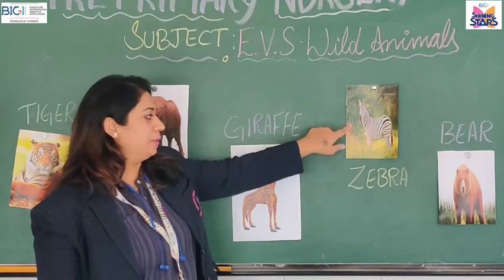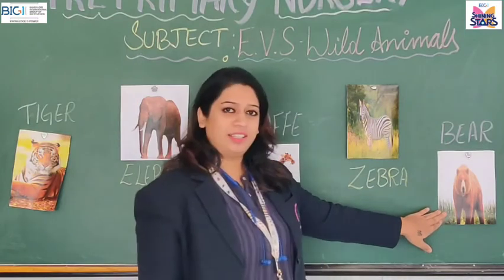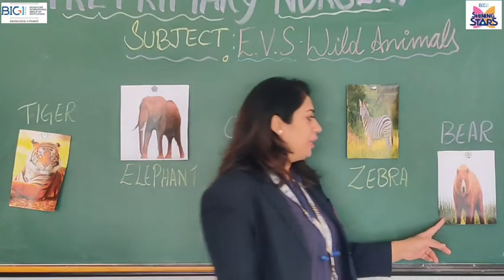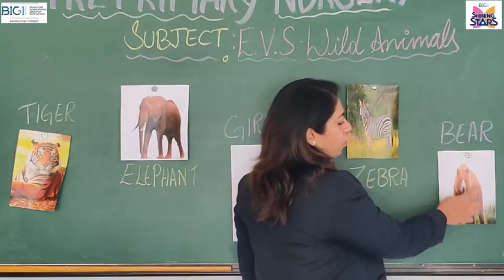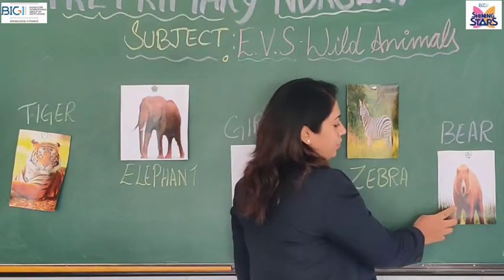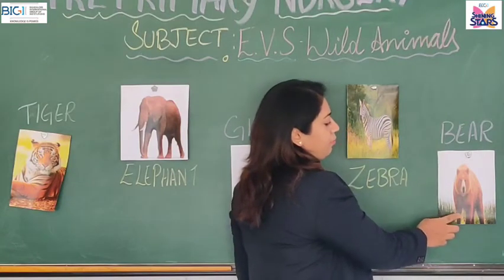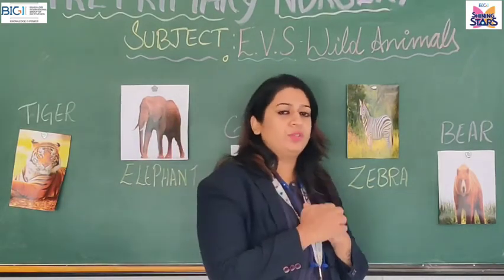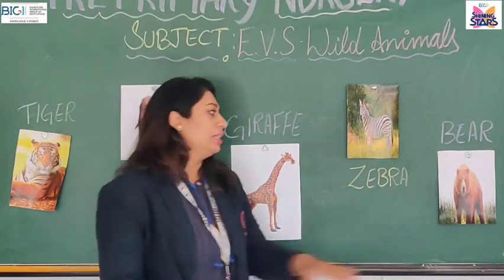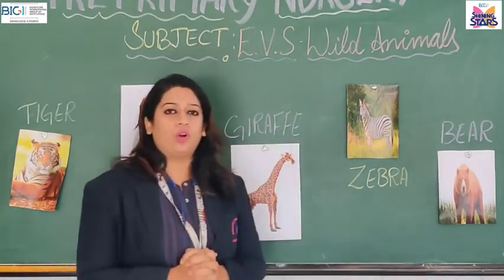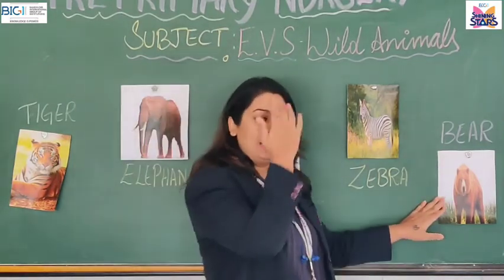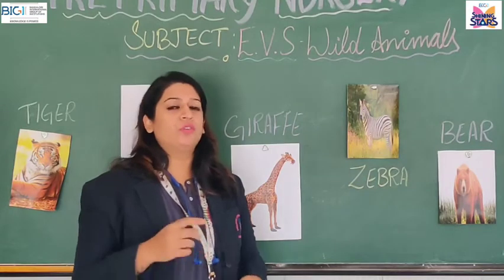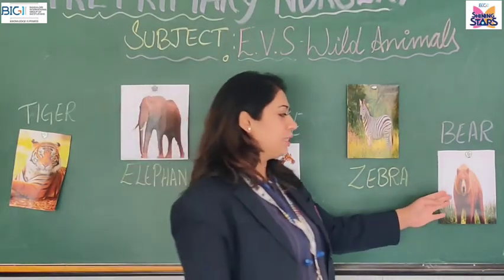Next, look at this, children — such a cute little bear. This is a bear. Can you see? It has fur all around its body. The bear has fur to keep it warm during the winter. If it feels cold, this fur helps it to be warm. The bear also hunts other animals for food. So, this is a bear, a wild animal.